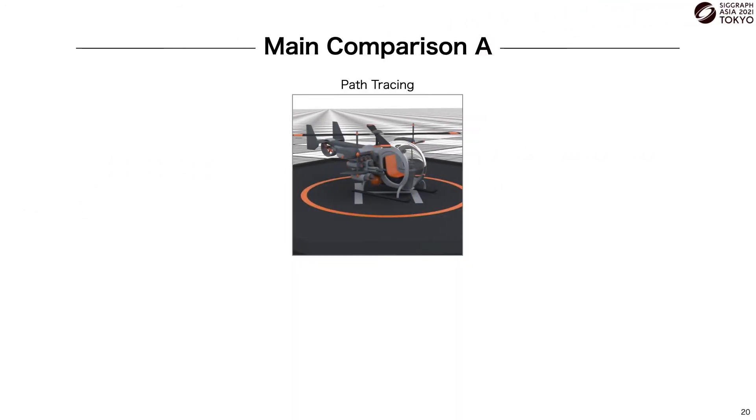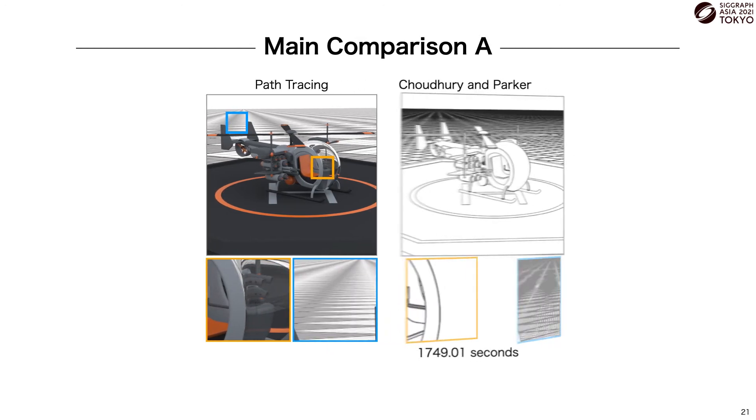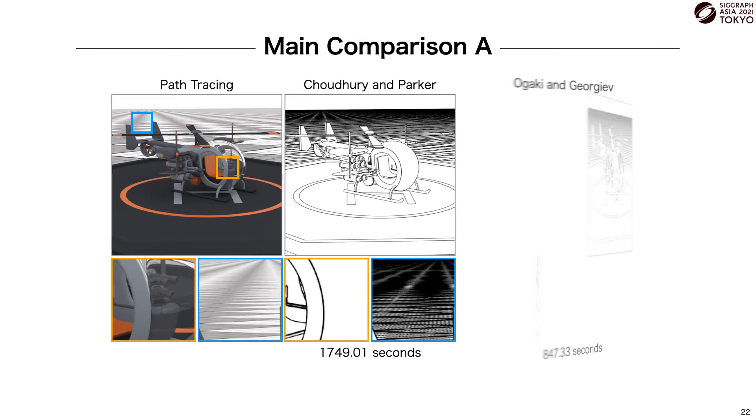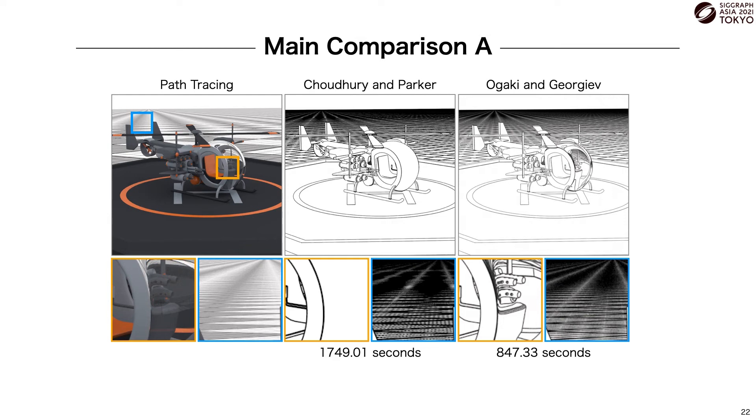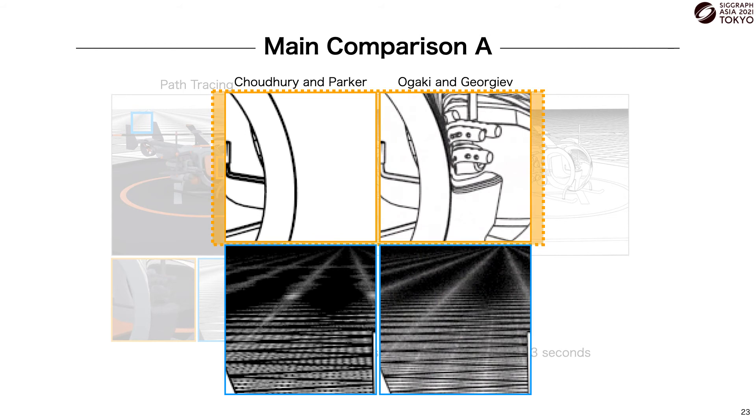Here we have a simple scene that has specular reflections and refractions in the glass and a checkerboard pattern in the background. The method of Chowdhury and Parker produces plausible lines for directly visible surfaces, but it lacks the refractions in the orange inset and shows some aliasing on the checkerboard pattern in the blue inset. The method of Ogaki and Georgiev overcomes these issues, and zooming in, we see that they produce plausible lines for the refraction through the glass, and their randomized sample rays reduce aliasing on the checkerboard.